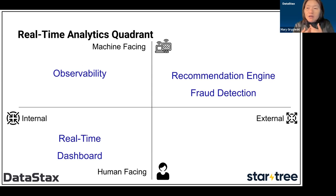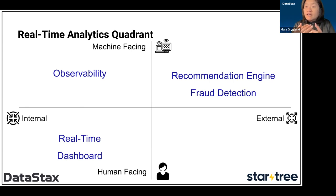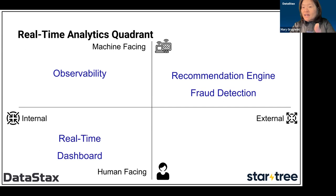Another usage is fraud detection. We all have bank accounts and there are always people trying to commit theft — on the internet, hackers try to steal money. Systems can be deployed as fraud detection that monitors your account. Say you're all based in Tokyo and suddenly your bank account has a debit withdrawal made in Hokkaido. Your fraud detection system is event-driven, so it immediately knows something is wrong, grabs the data, and notifies you to take action.